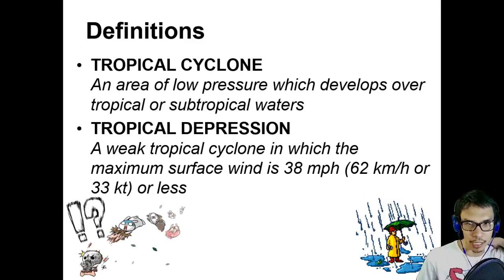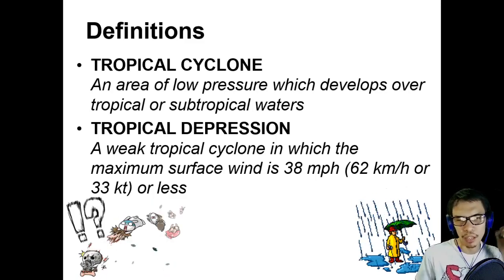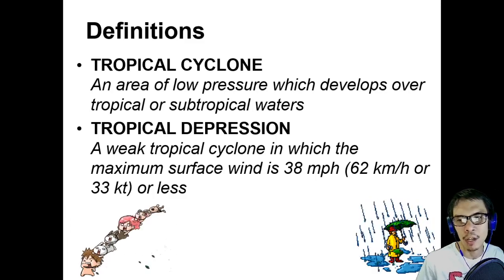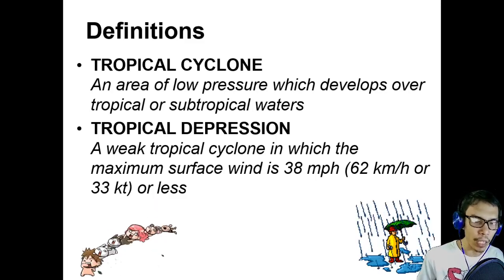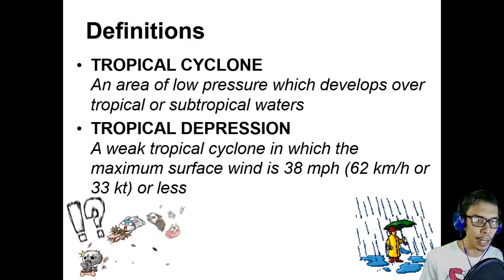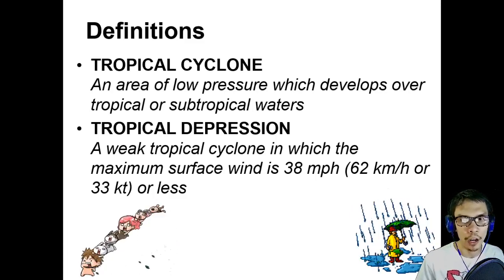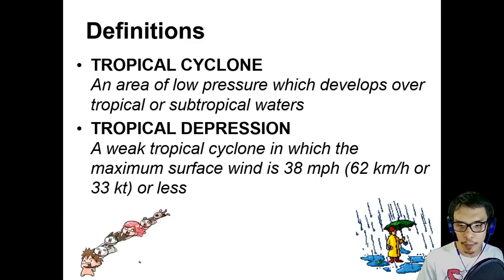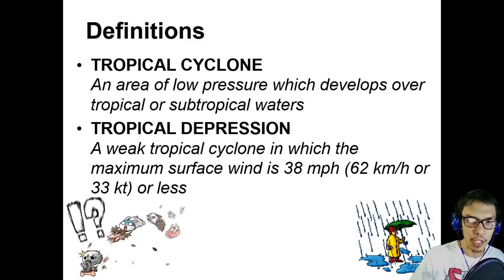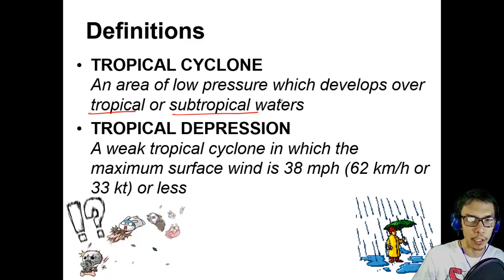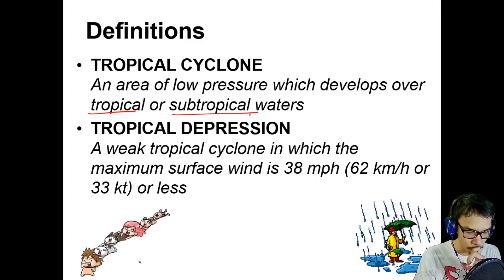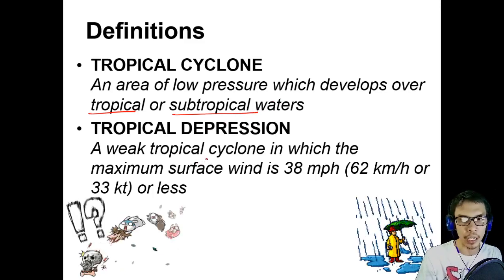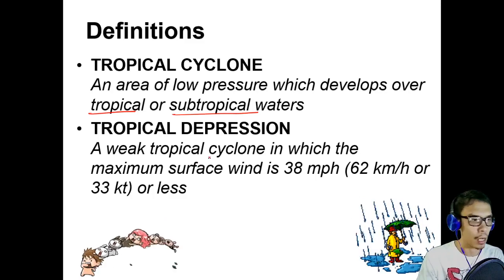A tropical cyclone — also called typhoon or hurricane — is an area of low pressure which develops on tropical and subtropical waters. These are weather disturbances formed based on that definition: on tropical and subtropical waters, which we can find near the equator, from zero to 20 degrees north and south.